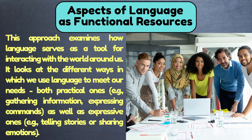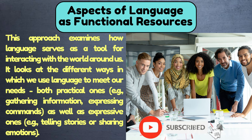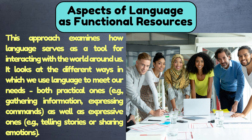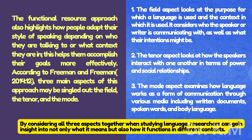Aspects of language as functional resources: This approach examines how language serves as a tool for interacting with the world around us. It looks at the different ways in which we use language to meet our needs — both practical ones, for example gathering information and expressing commands, as well as expressive ones, for example telling stories or sharing emotions. The functional resource approach also highlights how people adapt their style of speaking depending on who they are talking to or what context they are in. According to Freeman and Freeman (2014, p. 12), three main aspects of this approach may be singled out: the field, the tenor, and the mode.